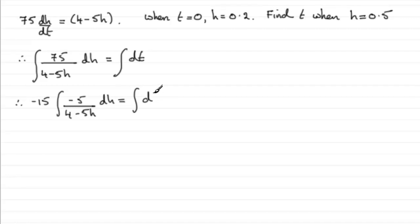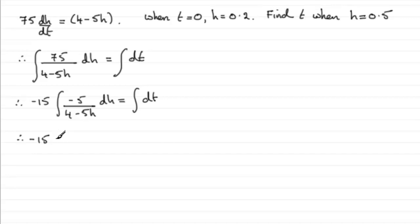On the other side, we've got the integral of essentially 1 with respect to t. For this integral, minus 15 times minus 5 gives the 75 — so it's still exactly the same. When I differentiate the bottom I get minus 5, and that is in the numerator. Whenever you have f(x) in the denominator and its differential in the numerator, it's the natural log of the denominator. So we get minus 15 times the natural log of 4 minus 5h — and we put that in mod signs. On the other side, integrating 1 with respect to t just gives t.